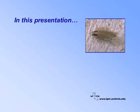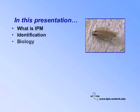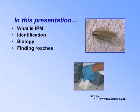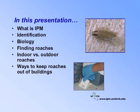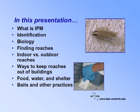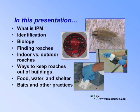This presentation will show you how to carry out an IPM program for cockroaches. We'll define IPM, explain why cockroach identification is so important in an IPM program, discuss general roach biology, and explain how to find roaches before the infestation becomes overwhelming. We'll distinguish indoor cockroach species from outdoor ones and discuss management strategies for each. We'll discuss ways to keep roaches out of buildings, and emphasize the importance of removing food, water, and shelter. Finally, we'll discuss baits and other management practices as part of an IPM program. At the end of the presentation is an interactive component where you will get a chance to review the key points and discuss your thoughts with the group.